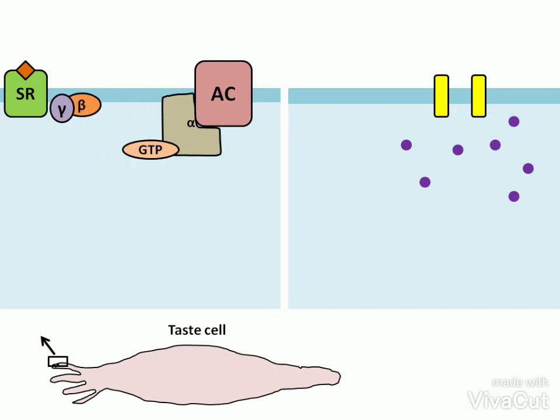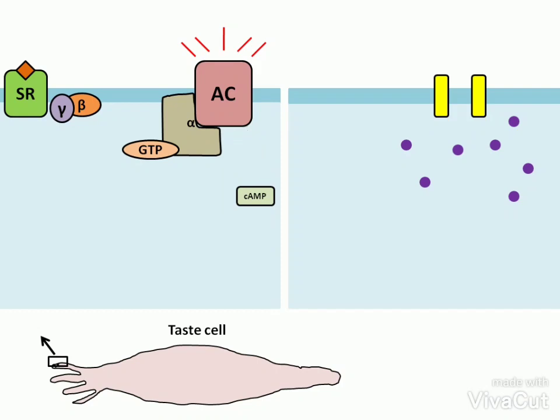The G-alpha GTP activates adenyl cyclase. The activated adenyl cyclase catalyzes the synthesis of cAMP from ATP. As a result, the concentration of cAMP increases.